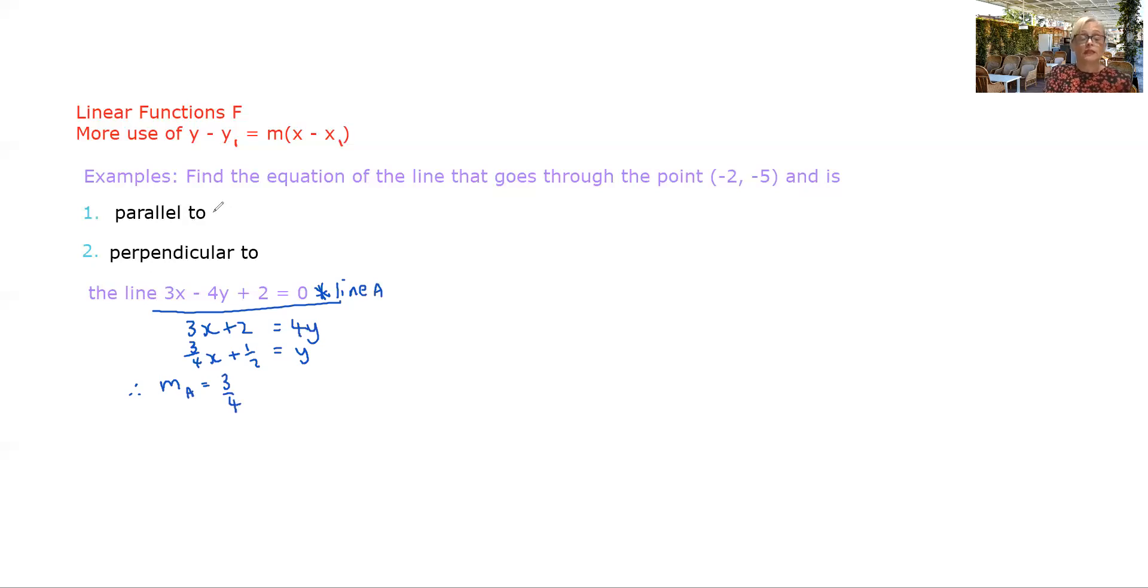When we're wanting to find a line that's parallel to that, the gradient will be 3/4 because gradients of parallel lines are the same. When we're wanting to find this equation we're going to want to have a gradient that is a negative reciprocal of this. So we will need to use -4/3.